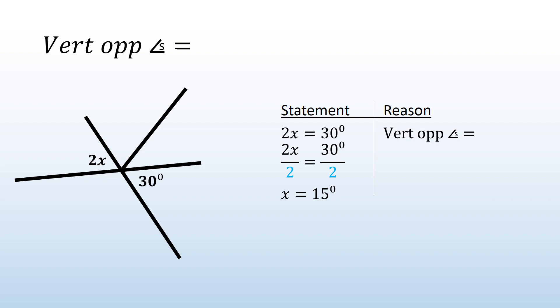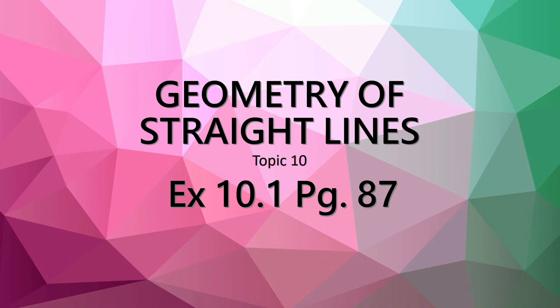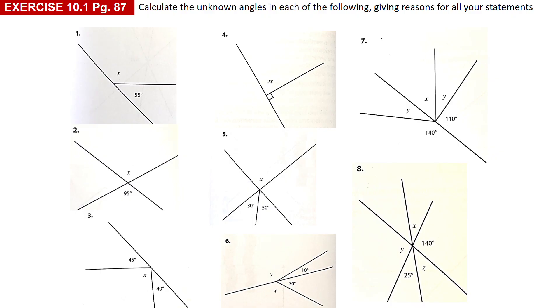So the three reasons that we've done today: angles around a point, angles on a straight line, vertically opposite angles, you should have an example for all three of those in your book. And then after that, you can write down your heading geometry exercise 10.1 page 87. And I would like you to do that whole exercise. This is what it looks like for those of you that don't have a textbook. So number one to number eight, you need to calculate all the unknowns of the angles.